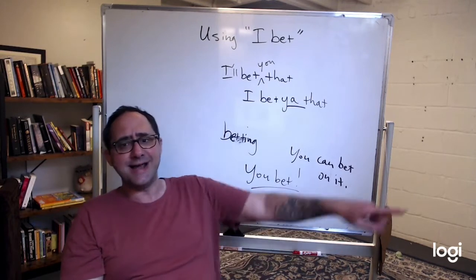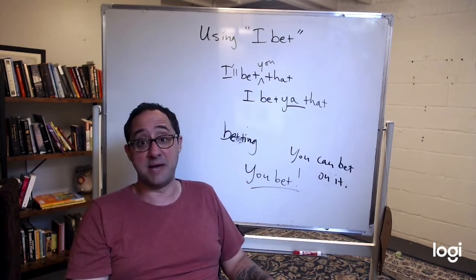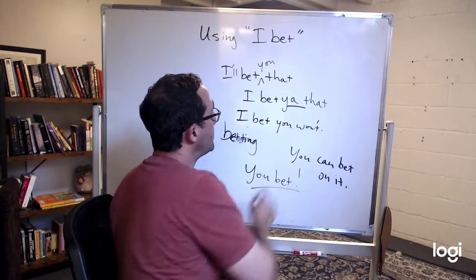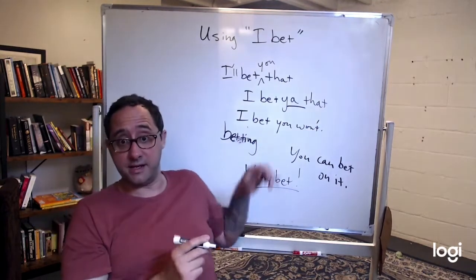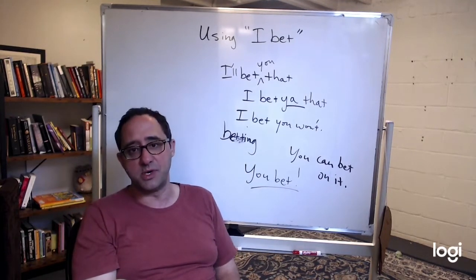So your friend says, I think I can jump down all of those steps. And you say, I bet you won't. This is also a form of the betting, but you're challenging him. You're saying do it. And you might even say, I bet you ten bucks you won't.